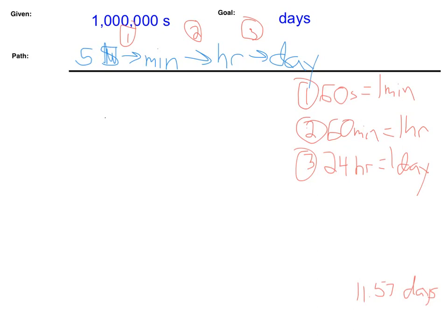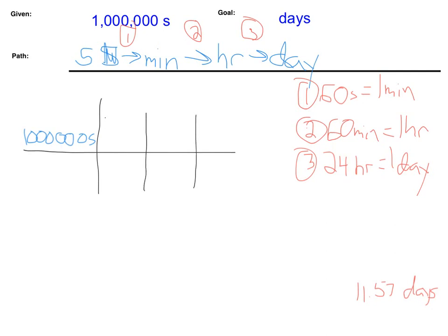So we can start building our railroad tracks. We're going to take what we're given, which is 1,000,000 seconds, and we start building our tracks. We note that we have one, two, three conversions, so therefore I'm going to build one, two, three additional sets of tracks. We have seconds on top, therefore we have to put seconds on bottom. Please remember that your sets of railroad tracks line up with your conversions — my first conversion is this set of tracks, my second conversion is this set, and my third conversion is this set.